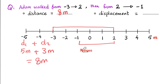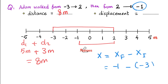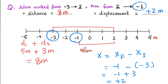Displacement is different — it's the final point minus the initial point. The final point is negative 1 and the initial point is negative 3. Be careful: negative 1 minus negative 3 is negative 1 plus 3, which is positive 2. So Adam was displaced 2 meters total in the positive direction, meaning eastwards. Adam started at negative 3, walked back and forth, and ended at negative 1 — from negative 3 to negative 1 is 2 east, making the total displacement positive 2.